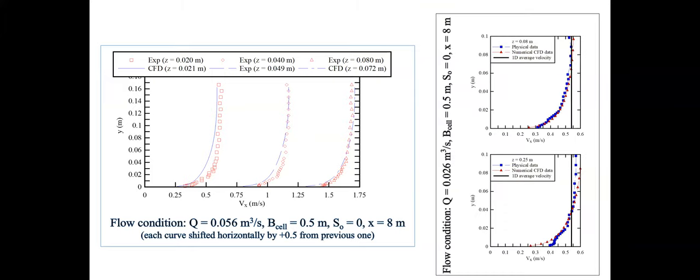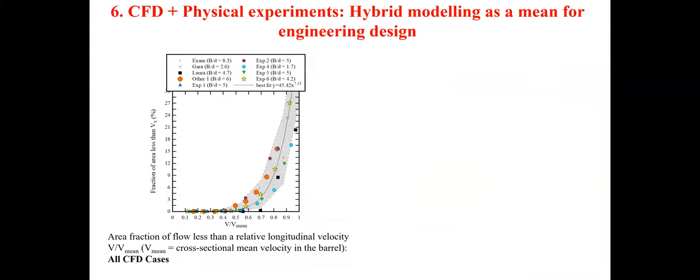Looking more closely at velocity profiles at close distances from the sidewall — at 20 millimeters, 40 millimeters, and 80 millimeters — we see overall very good agreement between the CFD numerical work in blue and the experimental data in red. That is for one discharge, and here is an example of good agreement for a different discharge as well.